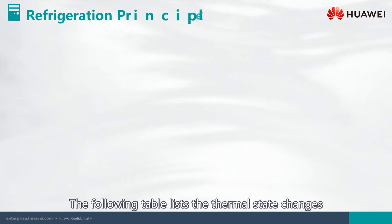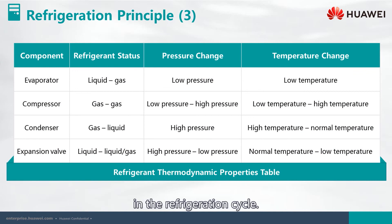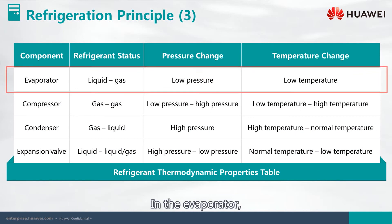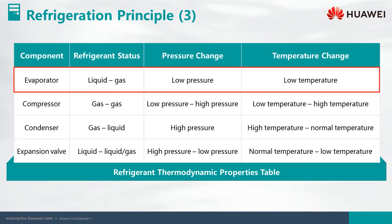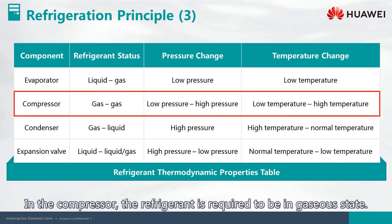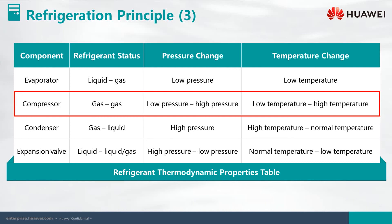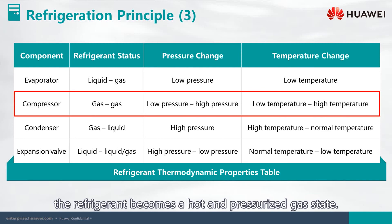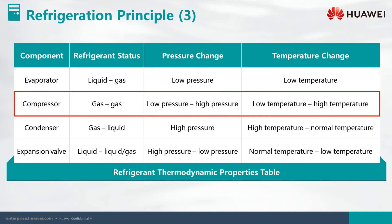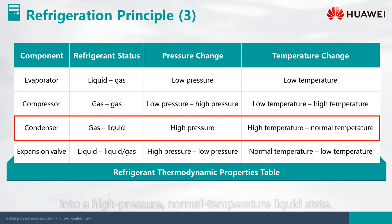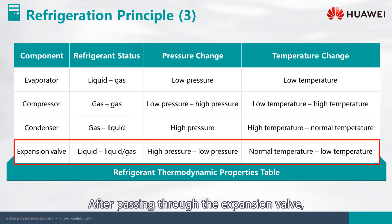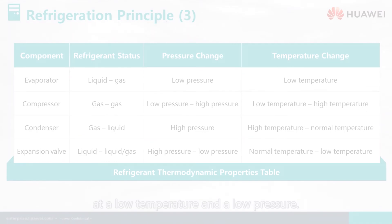The following table lists the thermal state changes in the refrigeration cycle. In the evaporator, the refrigerant is generally a liquid or gas-liquid mixture. In the compressor, the refrigerant is required to be in a gaseous state. At the compressor outlet, the refrigerant becomes a hot and pressurized gas. In the condenser, the refrigerant changes from a hot and pressurized gas into a high pressure normal temperature liquid state. After passing through the expansion valve, the refrigerant becomes a gas-liquid mixture at low temperature and low pressure.